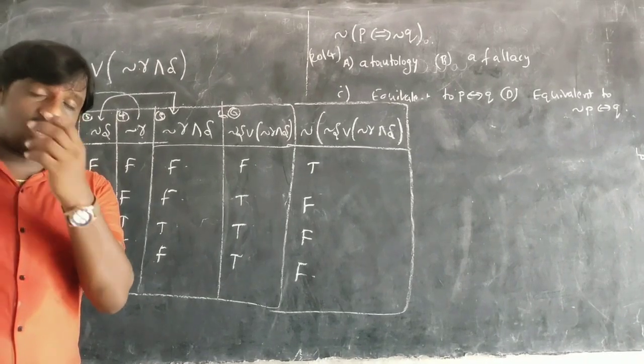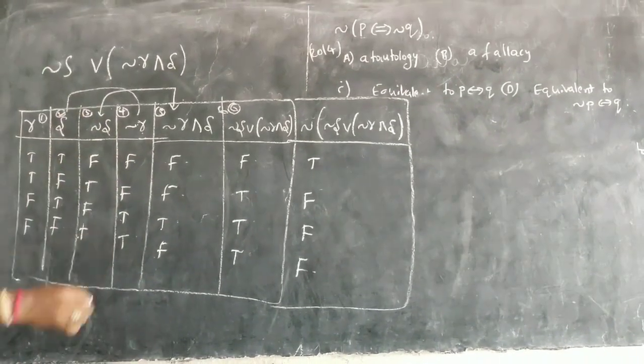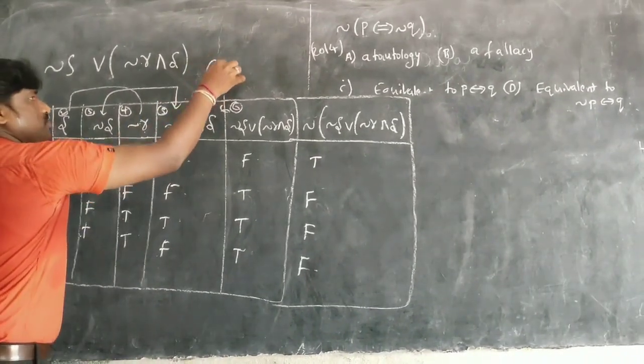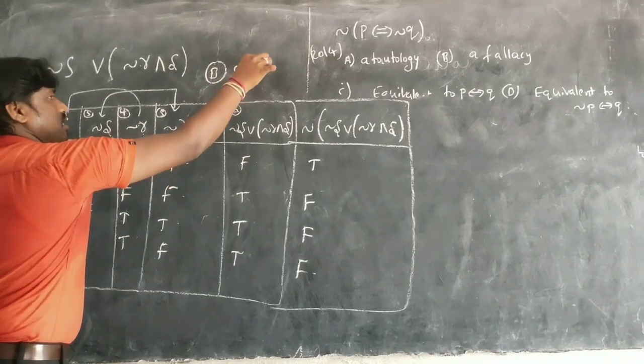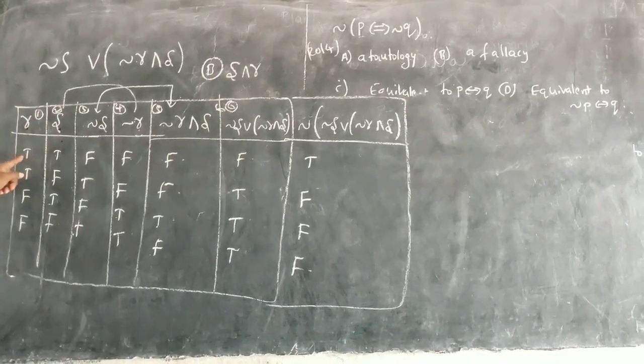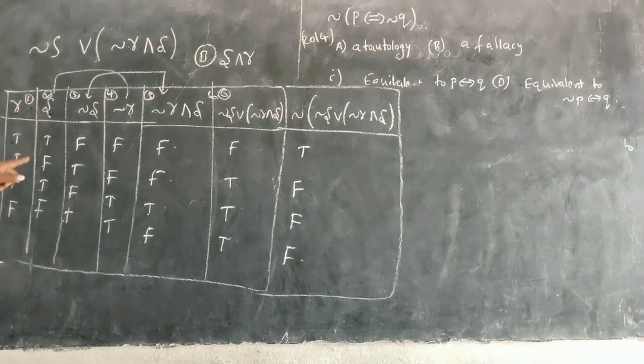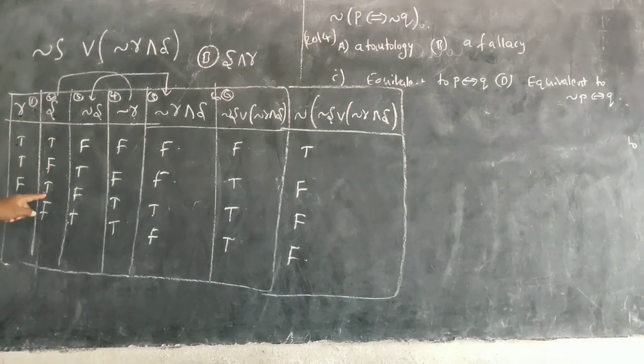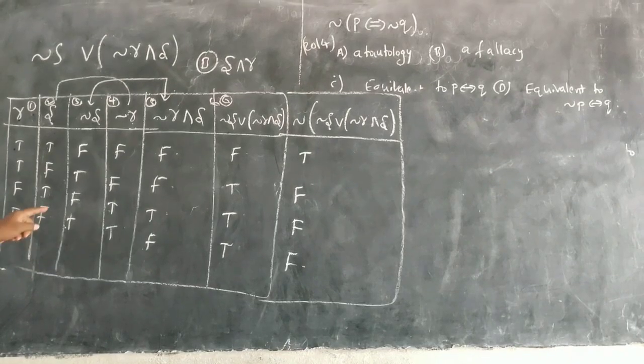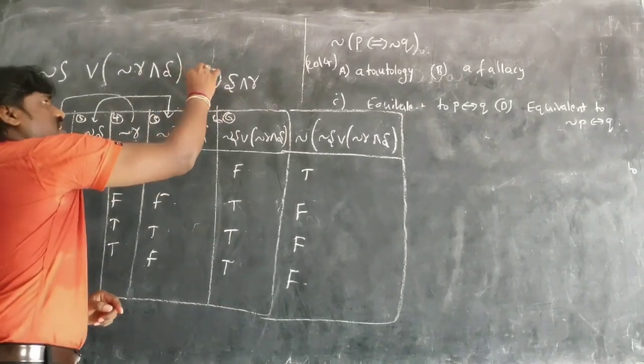You have the options: option A, B, C, D. Option B, what is option B? You have option B is S and R. In this S and R, if I do, T T will give T, T F will give F, F T will give F, F F will give F. This option B was the right answer.